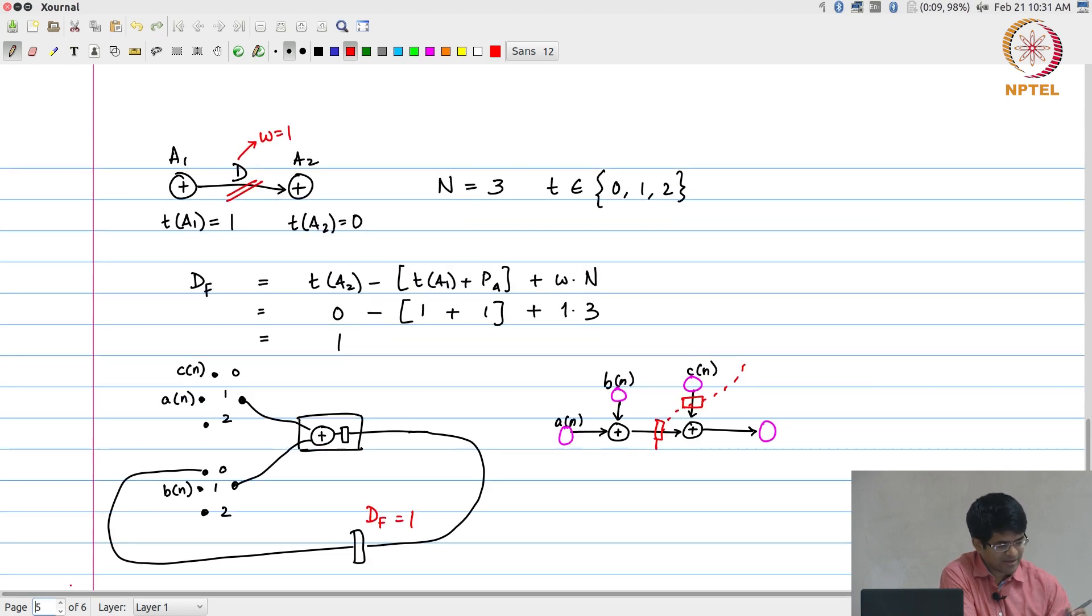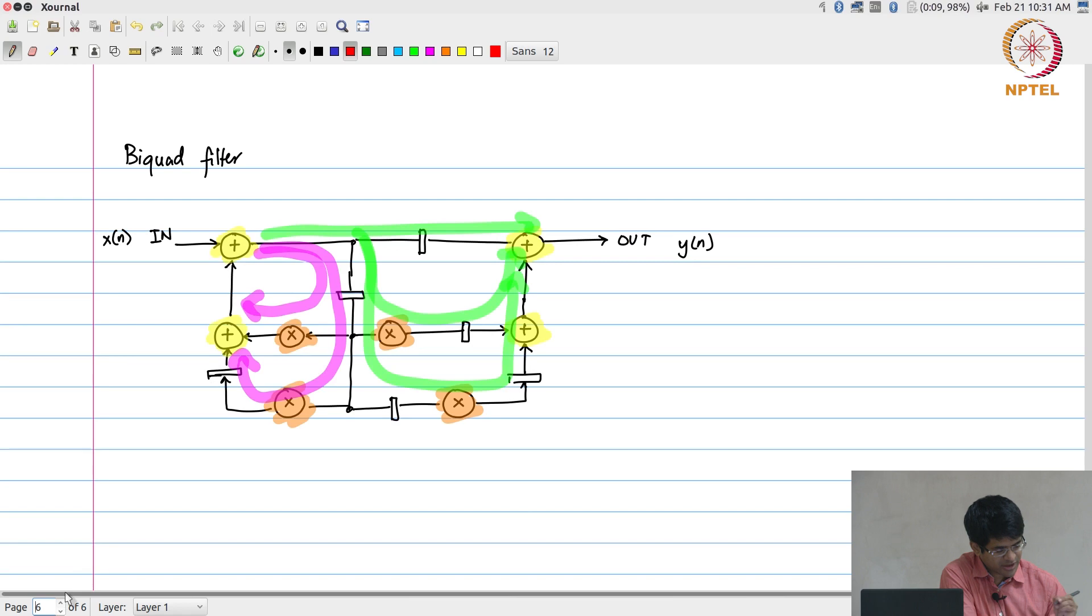And similarly for this third example, what I would have is this corresponds to S is equal to a2 at time 0, a1 at time 1, and nothing at time 2.